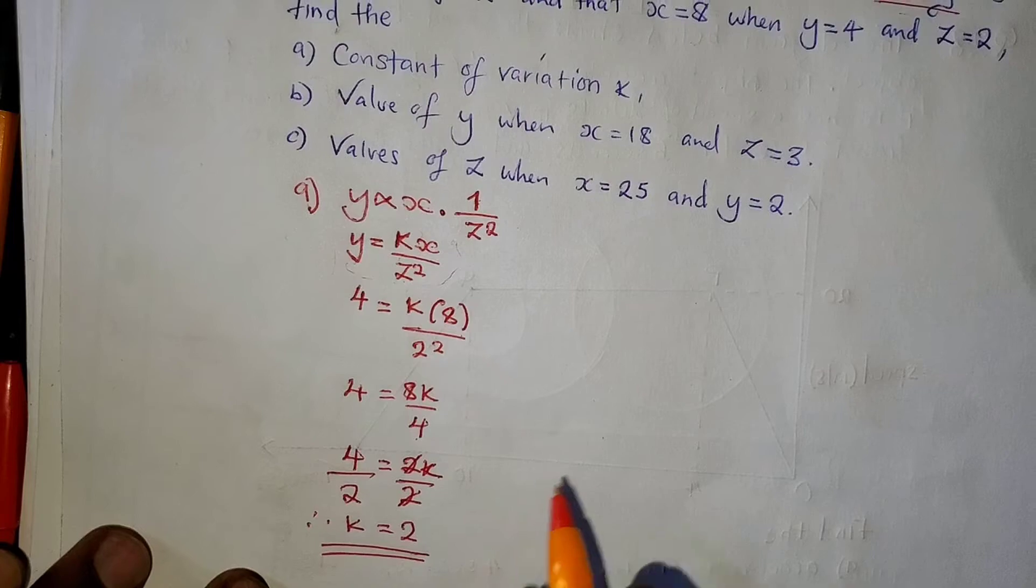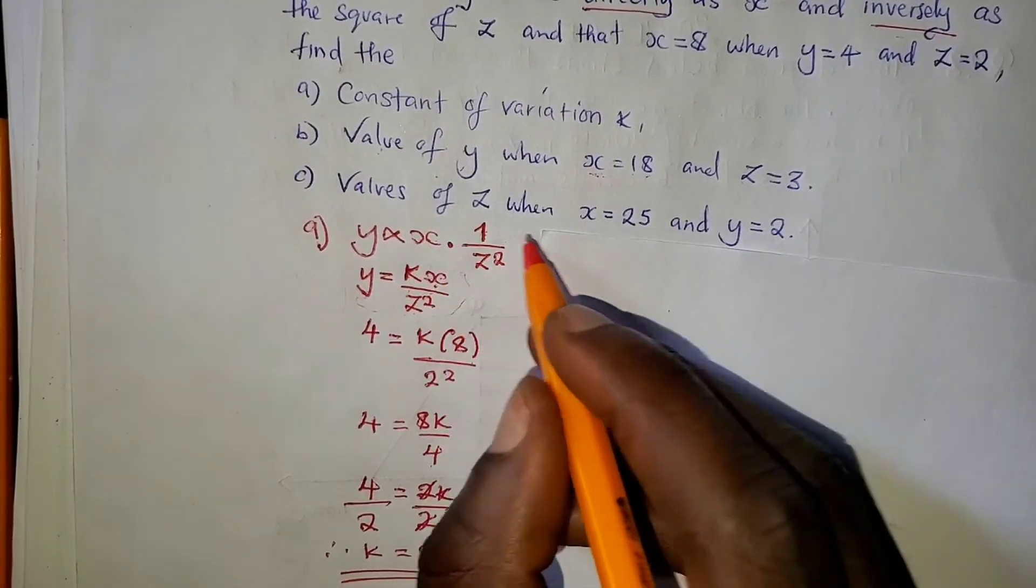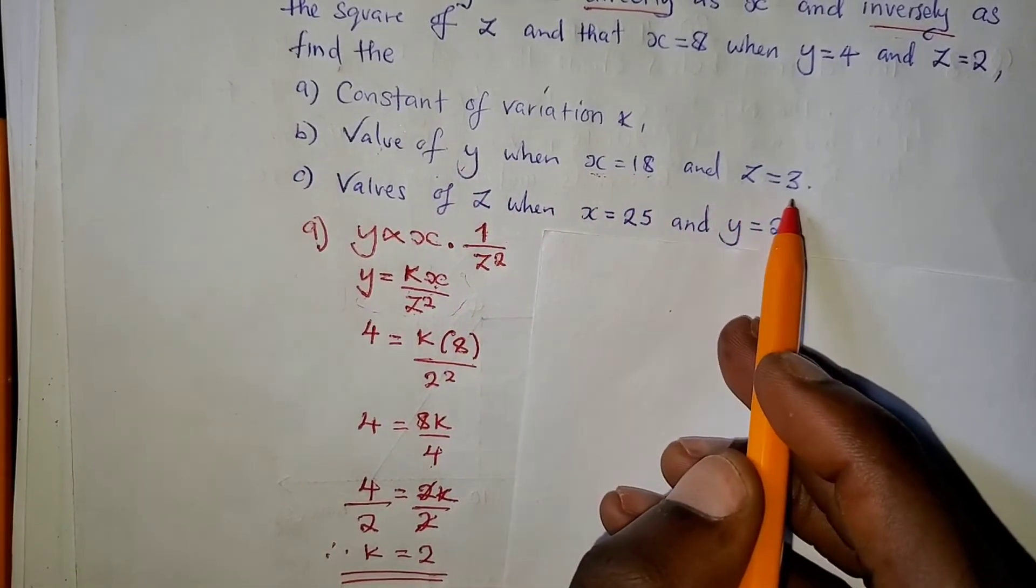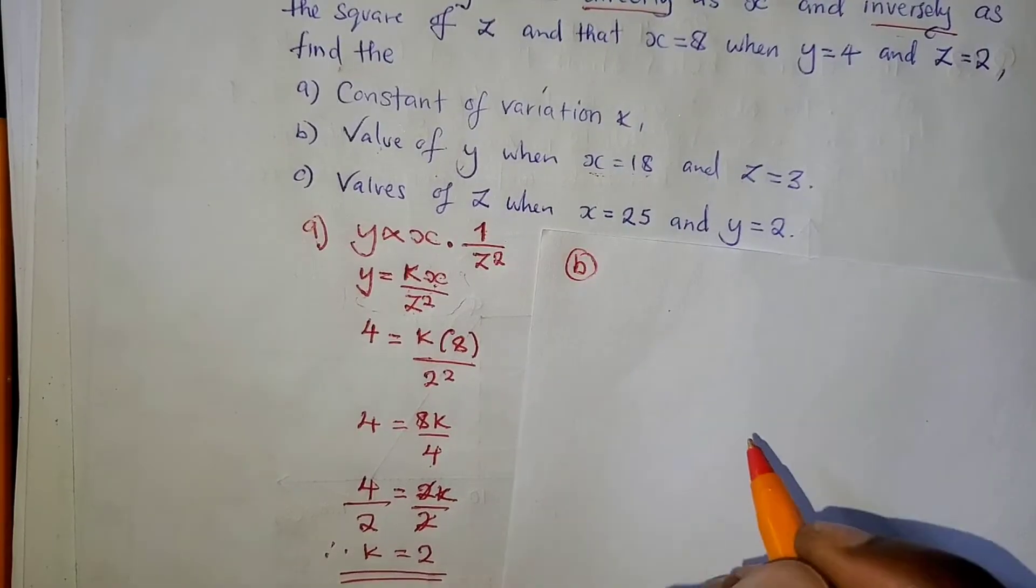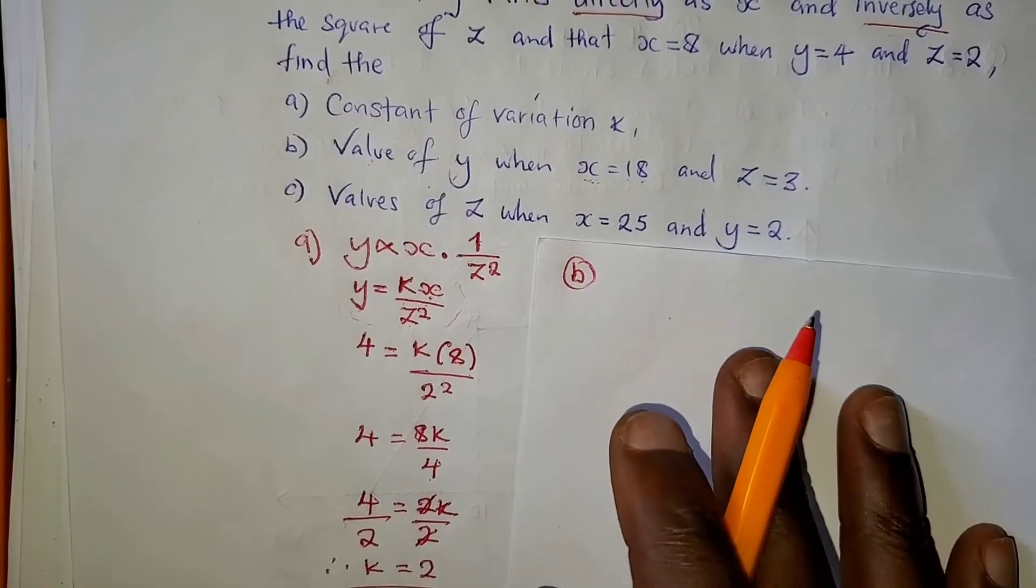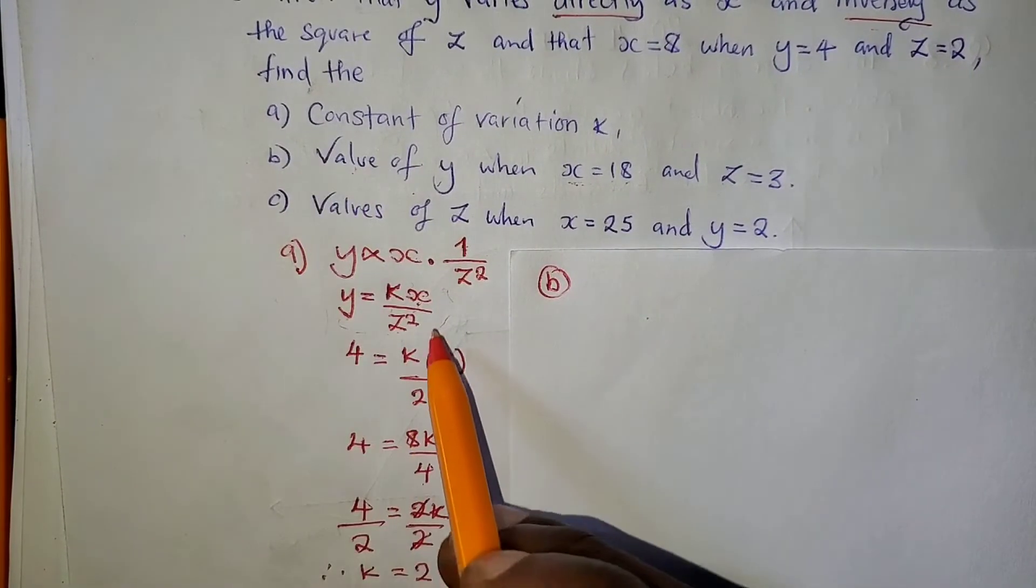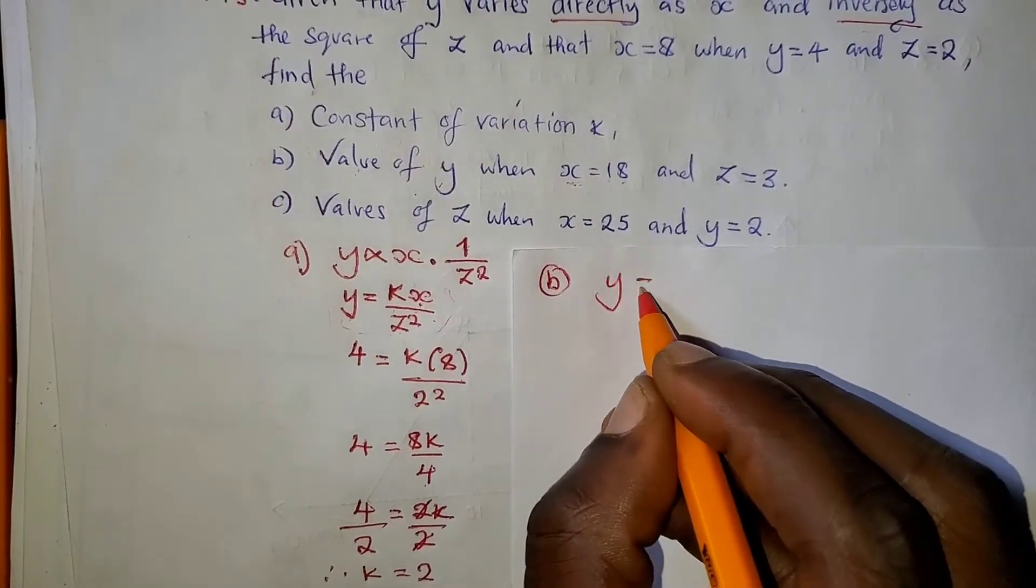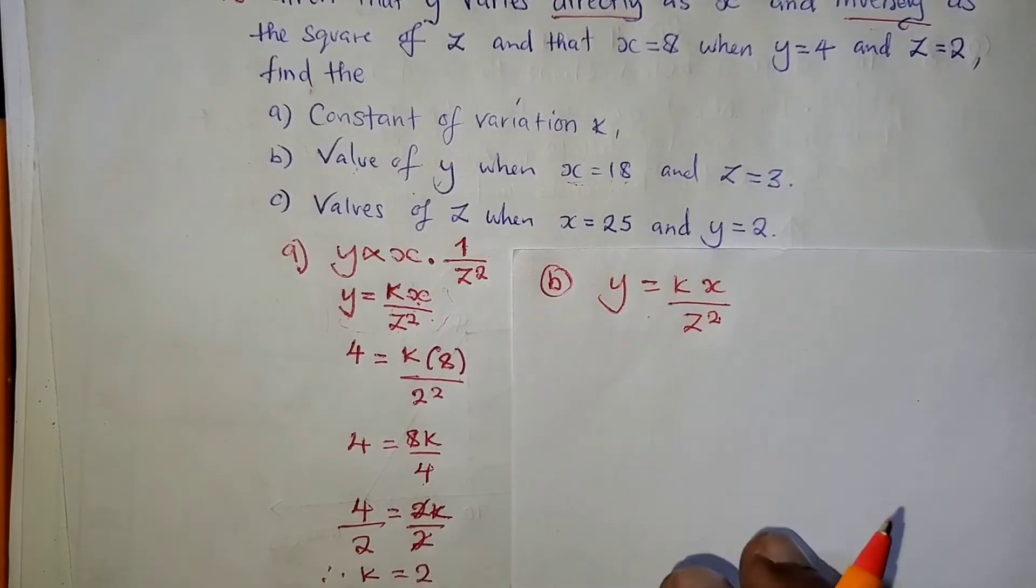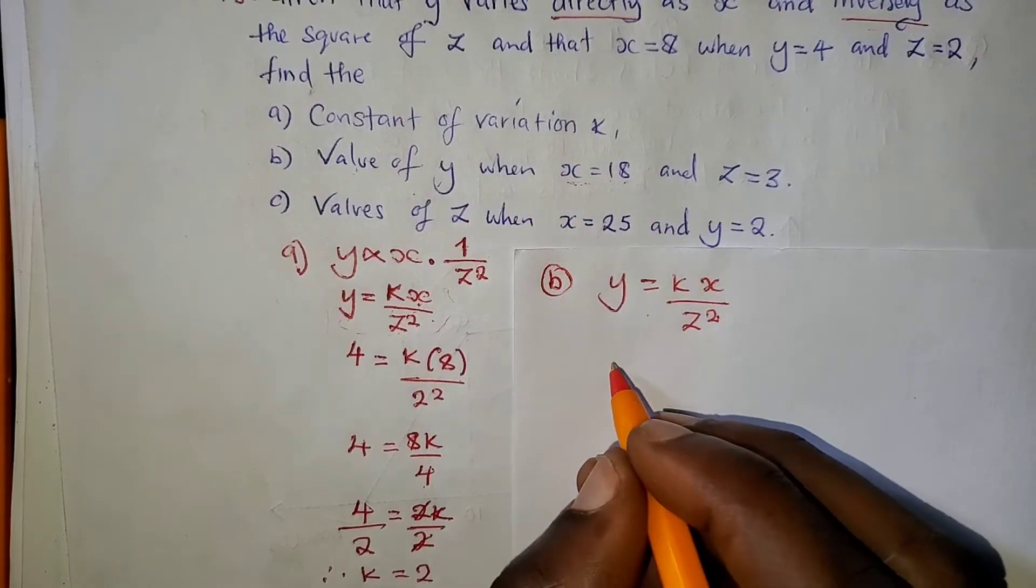Having found the value of K, the second question, we are asked to find the value of Y when X is 18 and Z is 3. So, what we are going to do, since this is question B, we are going to write this formula, which is Y equals KX over Z squared, then substitute the values. Y will be just Y.